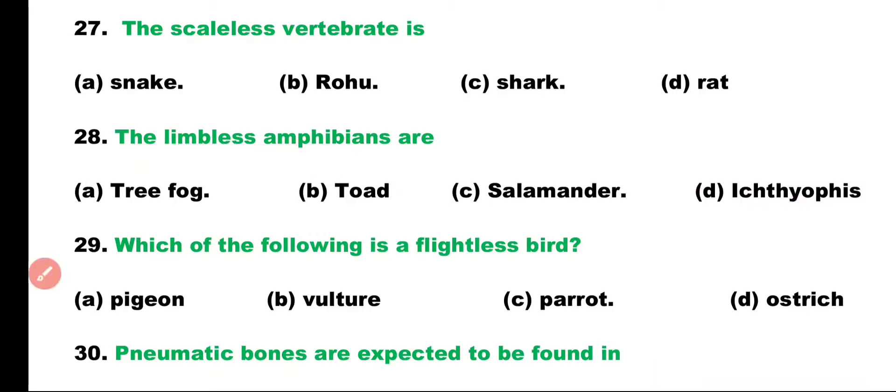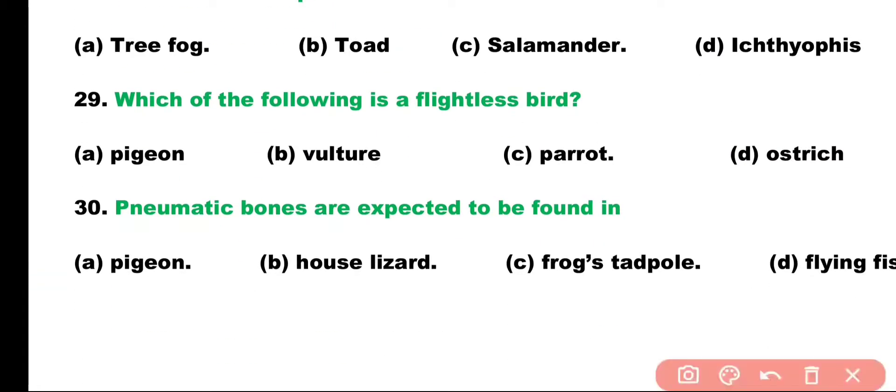Question number 29. Which of the following is a flightless bird? Pigeon, vulture, parrot, or ostrich? Correct answer is Option D. Ostrich is a flightless bird.